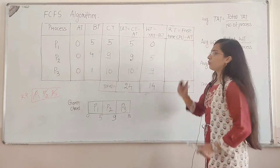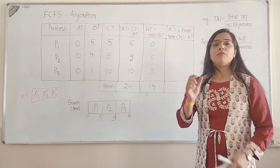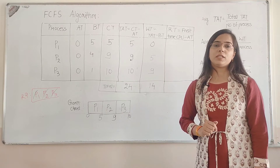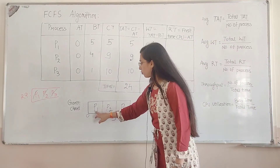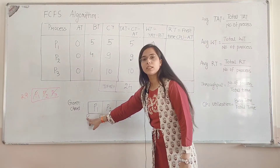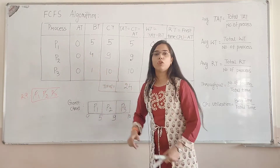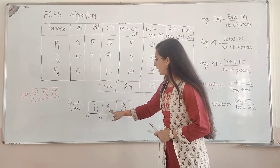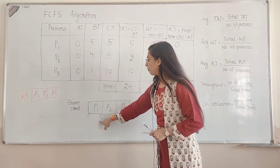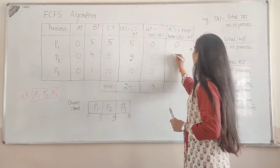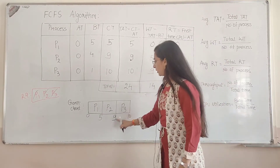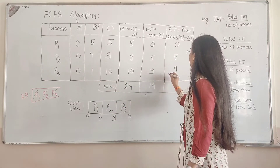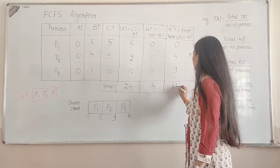Now, response time is the first time a process gets the CPU minus its arrival time. P1 first got CPU at 0, so 0 minus 0 = 0. P2 first got CPU at 5, so 5 minus 0 = 5. P3 first got CPU at 9, so 9 minus 0 = 9. Total response time is 14.